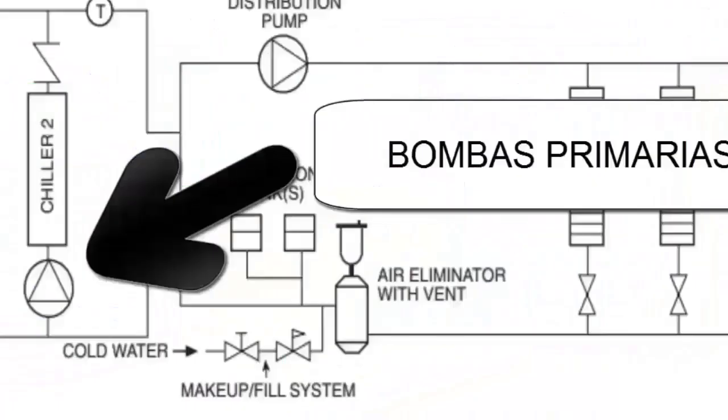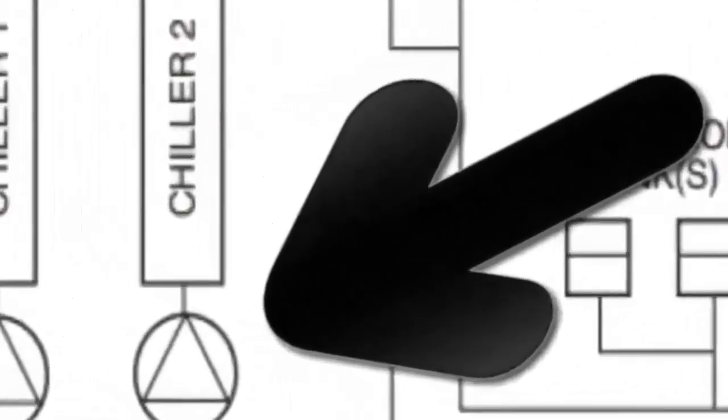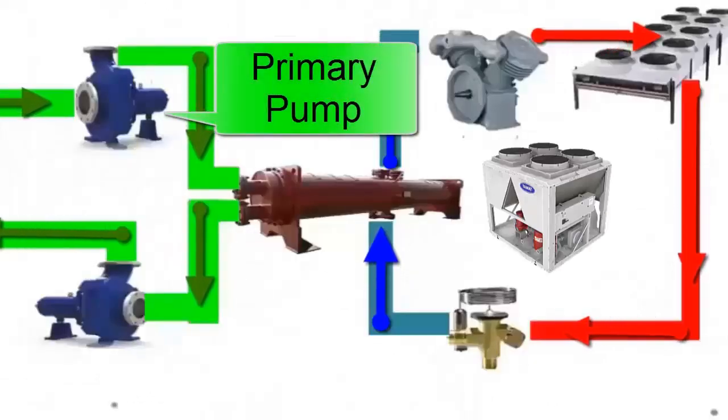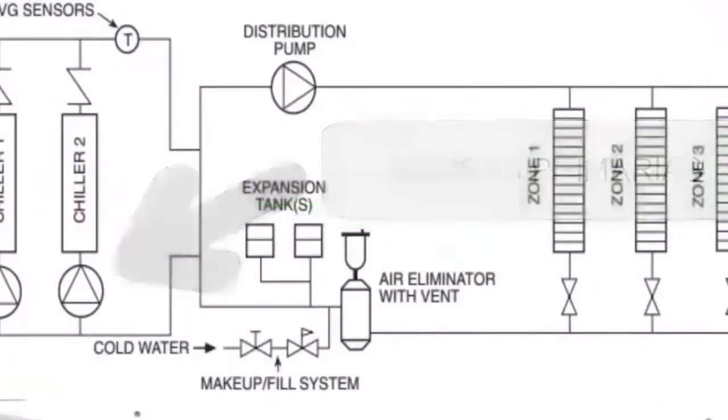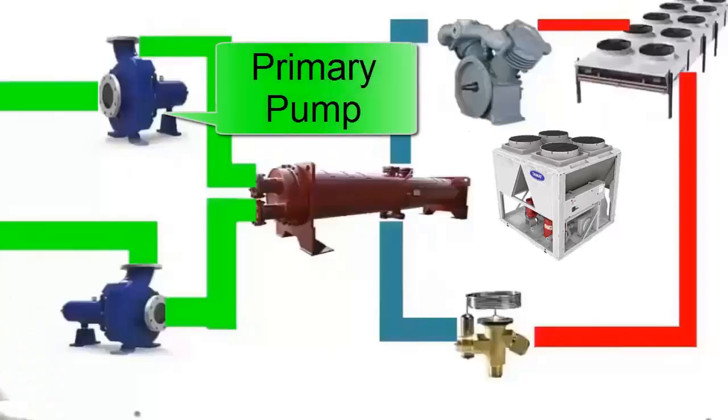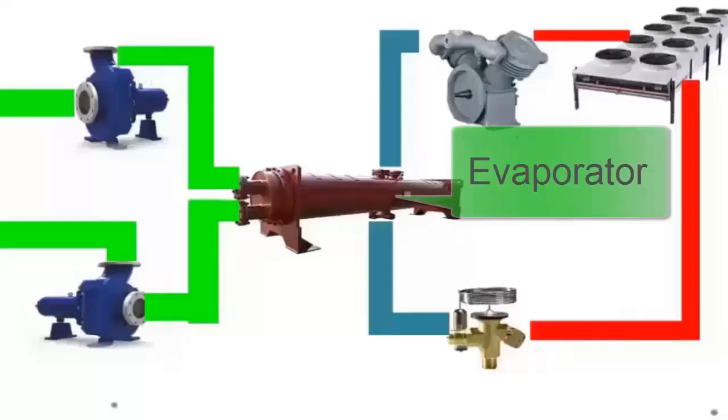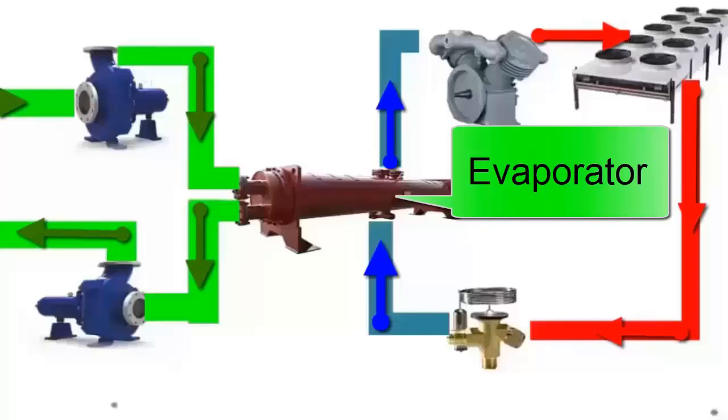In the diagram of the chilled water circuit on the left, several crucial components for the system's operation are clearly visible. Among these is the primary pump, strategically located at the top of the diagram. This pump plays an essential role as its main function is to move water from the storage tank to the chiller's evaporator or cooler.